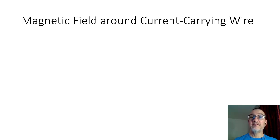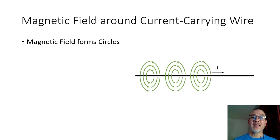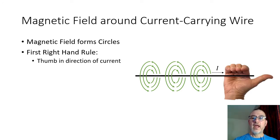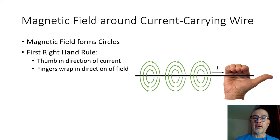Let's take a look at the magnetic field that is generated around a current-carrying wire. If we have this wire, in this case with the current moving to the right, what we discover is that the magnetic field lines are going to form circles around that wire. In order to determine the direction of that magnetic field, whether it's clockwise or counterclockwise, what we're going to use is what we call the first right-hand rule. You take your right hand, hold the wire — just grab onto the wire, imaginary — and as you line your thumb up in the direction of the current, you wrap your fingers around the wire, and the fingers will wrap in the direction of that magnetic field.